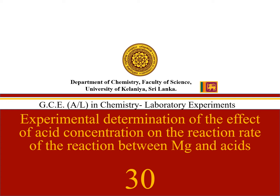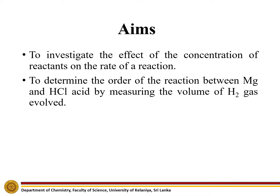Experiment number 30. Experimental determination of the effect of acid concentration on the reaction rate of the reaction between magnesium and acids. The aims of this experiment are to investigate the effect of the concentration of reactants on the rate of a reaction, and to determine the order of the reaction between magnesium and HCl acid by measuring the volume of hydrogen gas evolved.